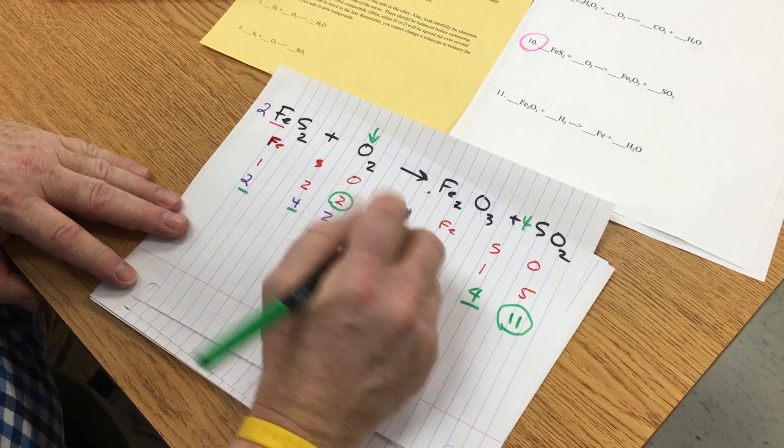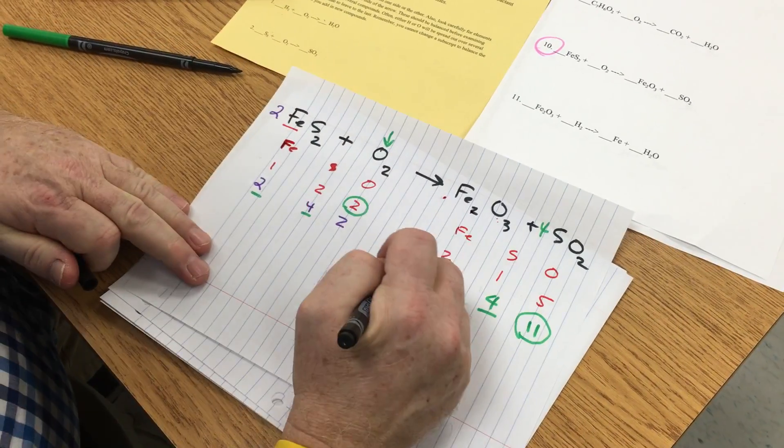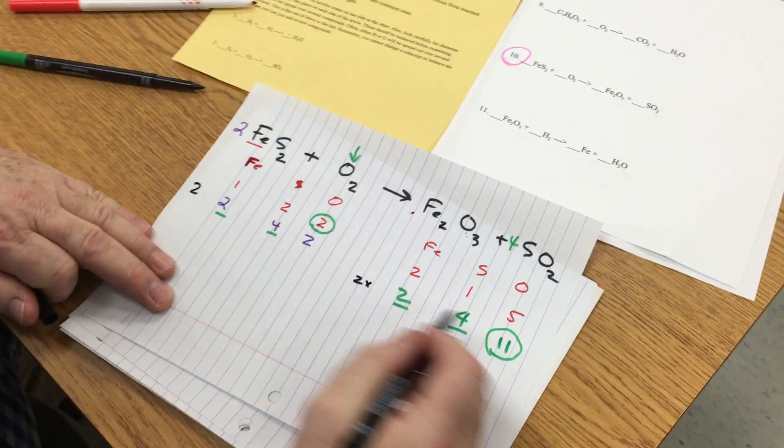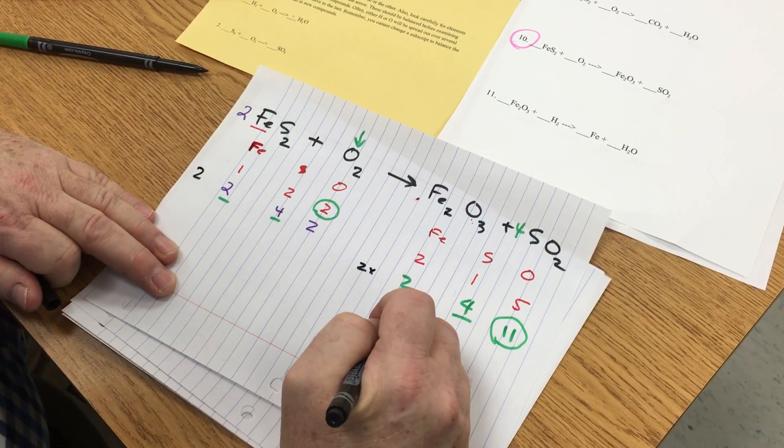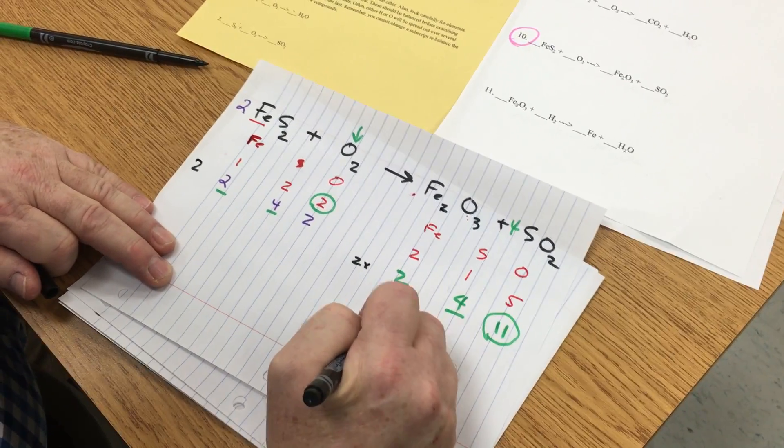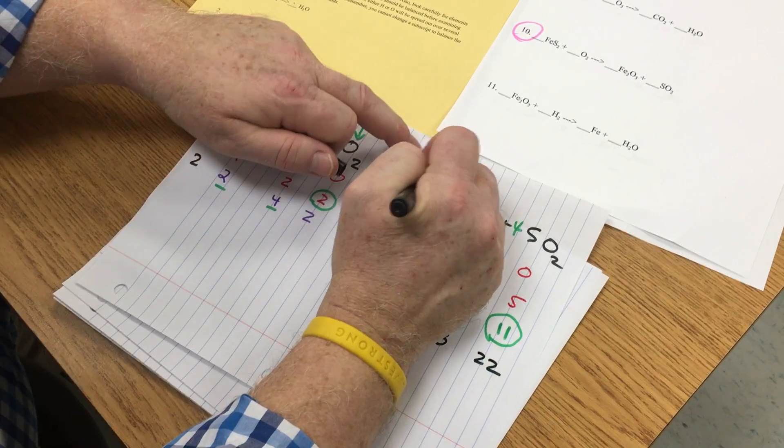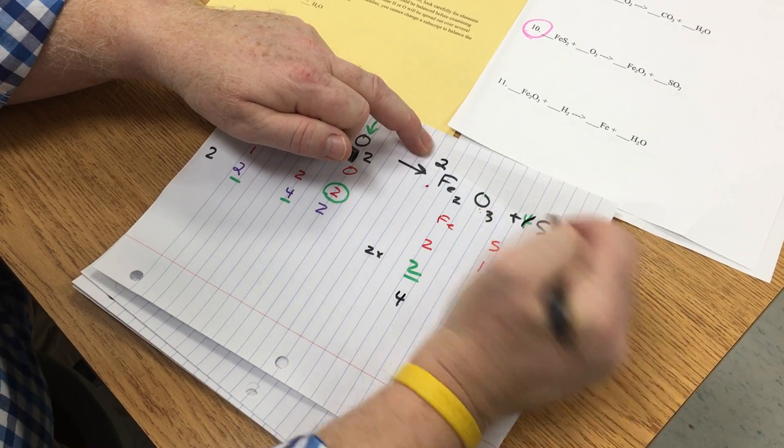So I'm going to just multiply all of this by two. Okay, and so on this side I'm going to want to have four, eight, twenty-two. And the easiest way to do that is to put a two in front of that, change that four to an eight.